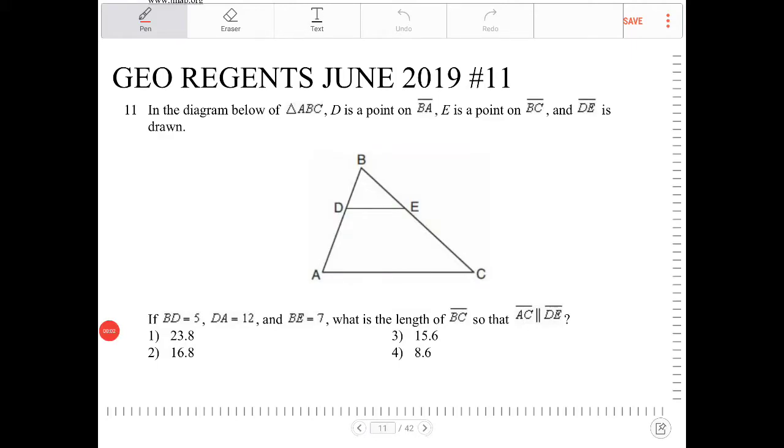In the diagram below of triangle ABC, D is a point on BA, E is a point on BC, and DE is drawn.